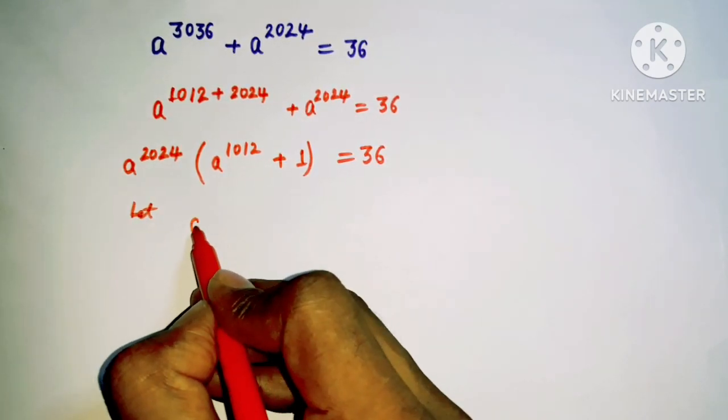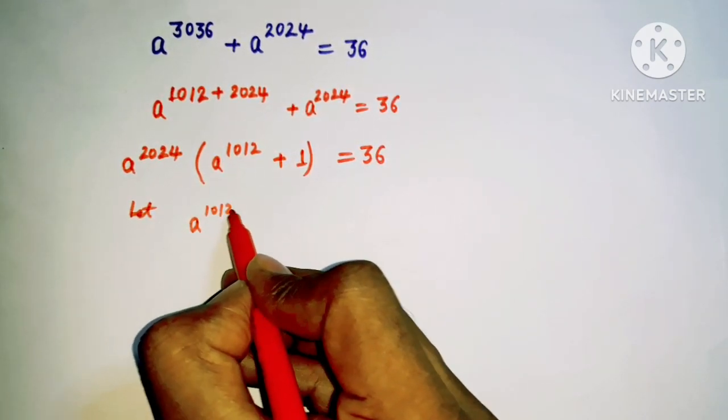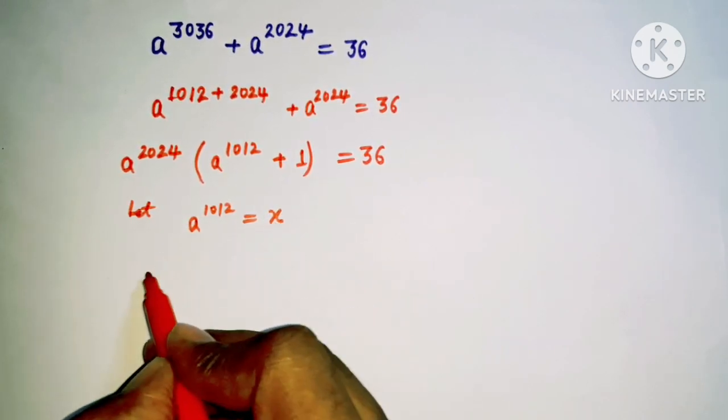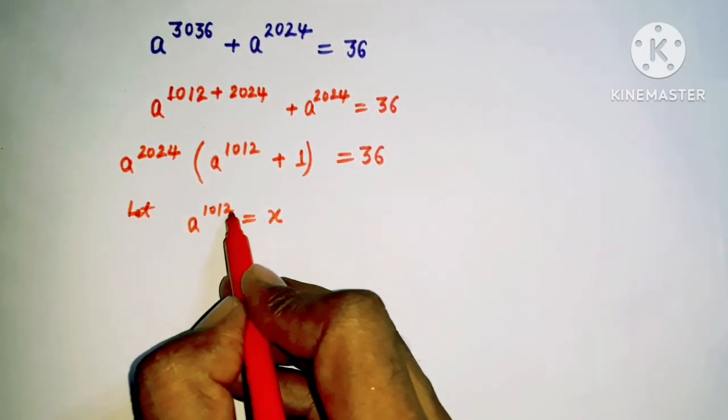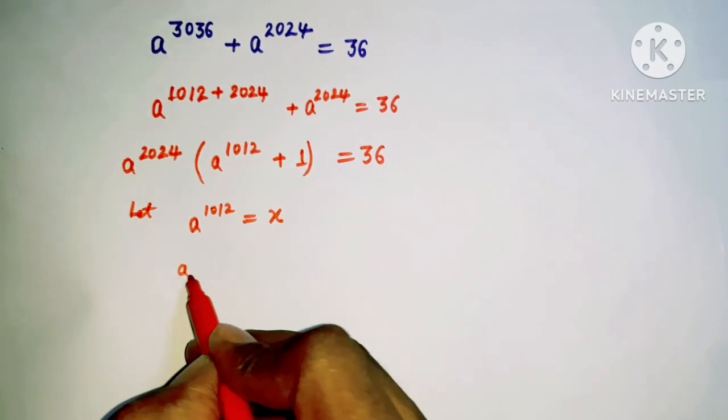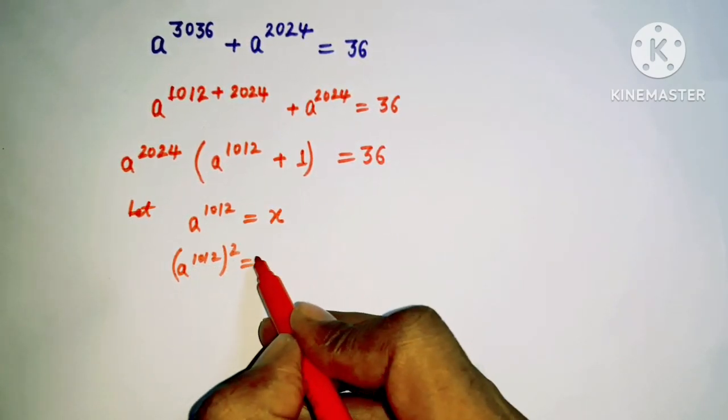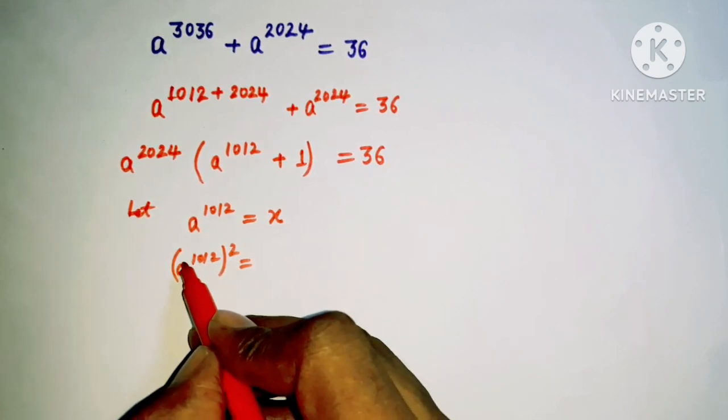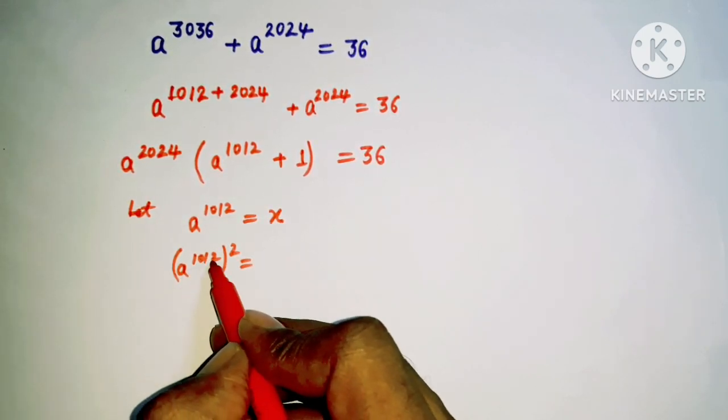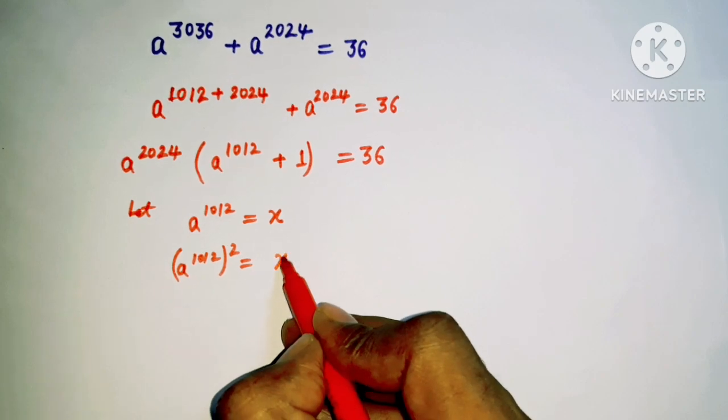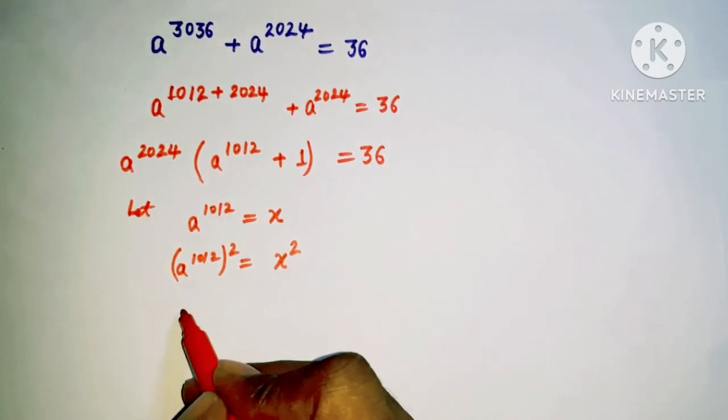Let a to the power 1012 be considered as x. And if I'm just putting a square over here, 1012 square, so this number is going to multiply here. So instead of a to the power 1012 we can put here x, here we have x square.